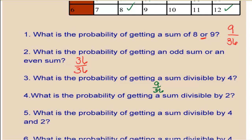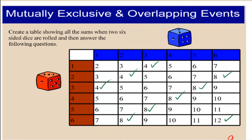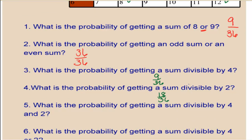What is the probability of getting a sum divisible by 2? That's the same thing as an even, so we're going to say half of them or 18 over 36. What is the probability of getting a sum divisible by 4 and 2? So we want to see where those overlap. If it's divisible by both 4 and 2, it's actually going to be the ones divisible by 4, which was 9 out of 36, because anything divisible by 4 is also divisible by 2.